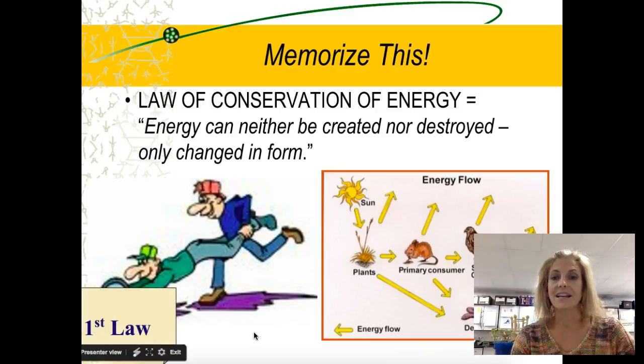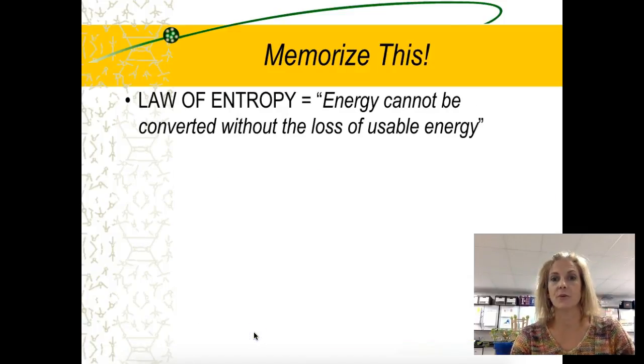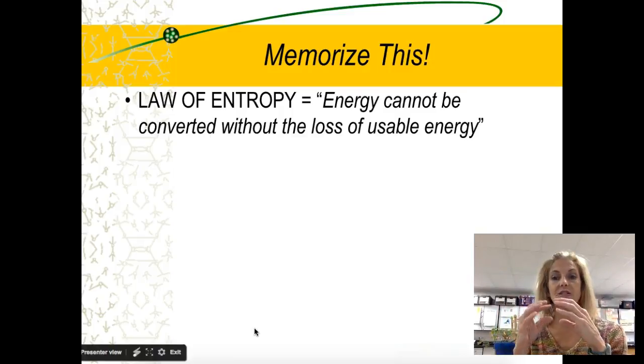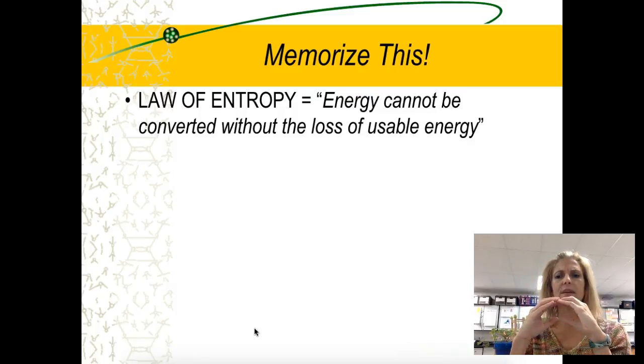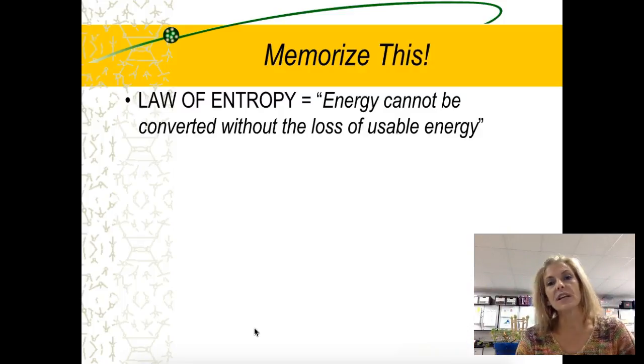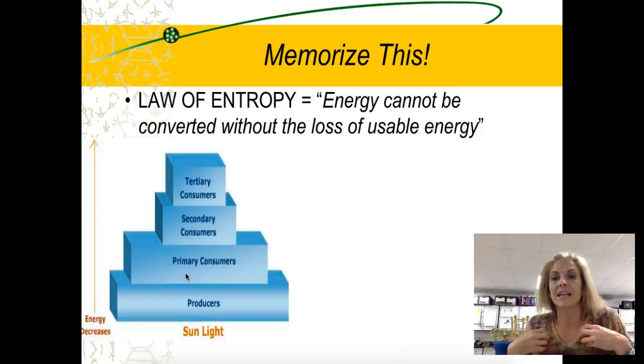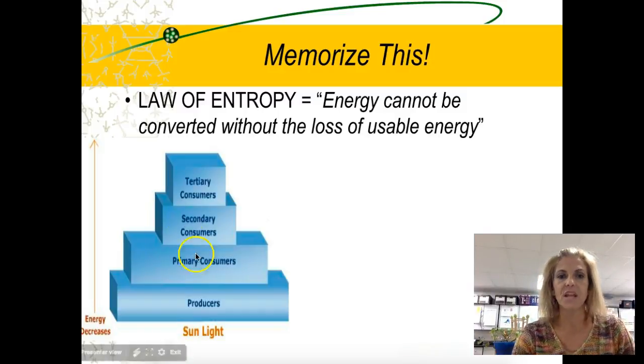The second law is the law of entropy which states energy cannot be converted without the loss of usable energy. I said the universe likes disorder. If the energy were going to be completely 100% transformed with no loss, that would be very tidy, that would be very neat and orderly. But the universe likes disorder, so we're going to lose some of that energy to space. The majority of lost energy goes in the form of heat. You know you're producing heat, it keeps us warm and it's getting off of us and surrounding us. So we are personally losing that component of the energy, but the universe hasn't lost it. It's still there, it's just been lost in another form and that form is heat.